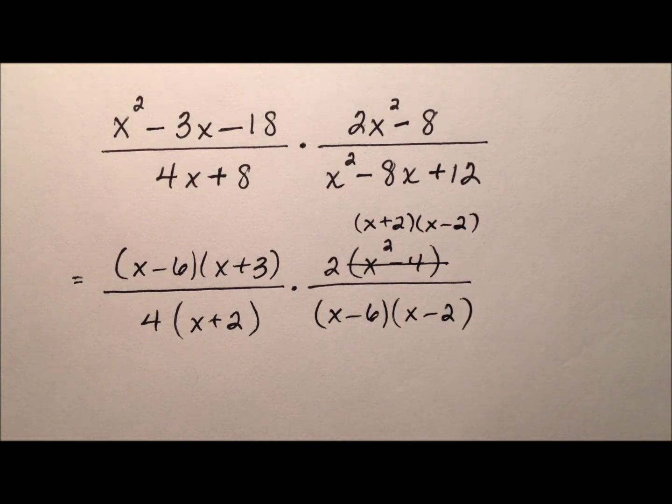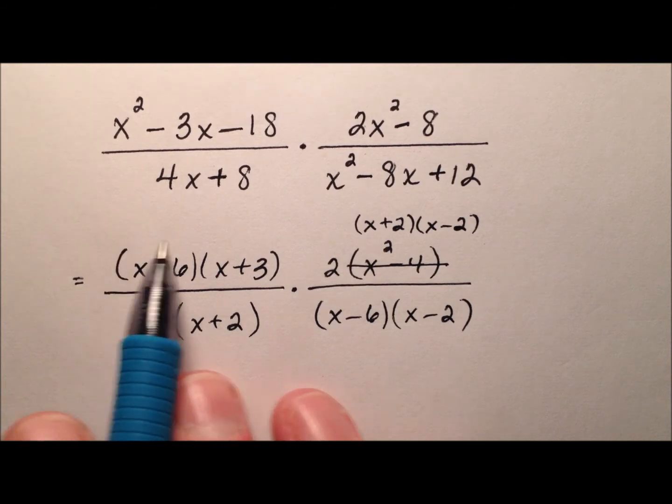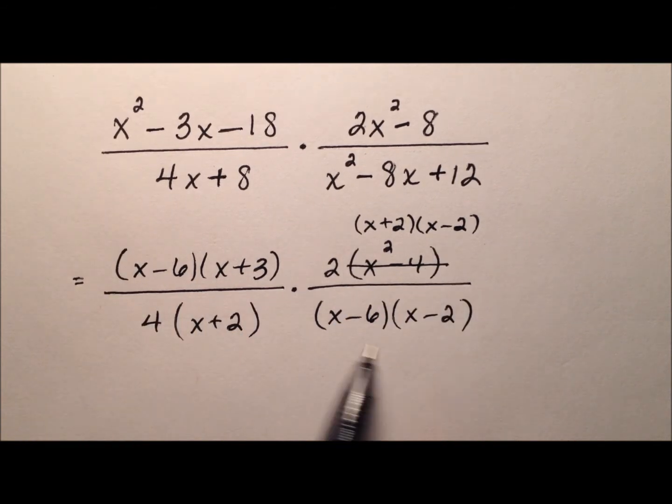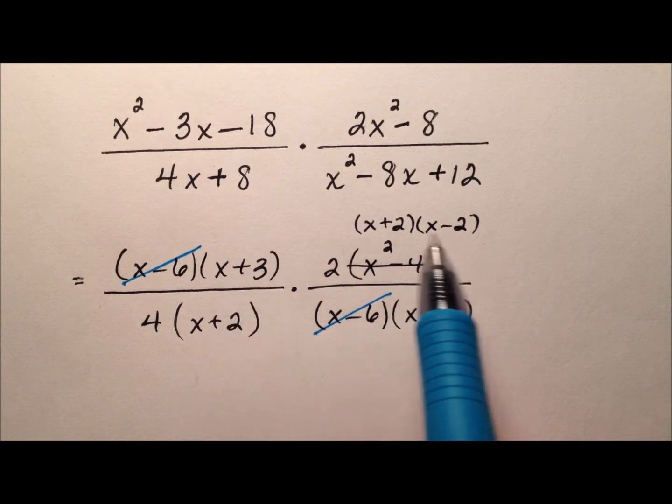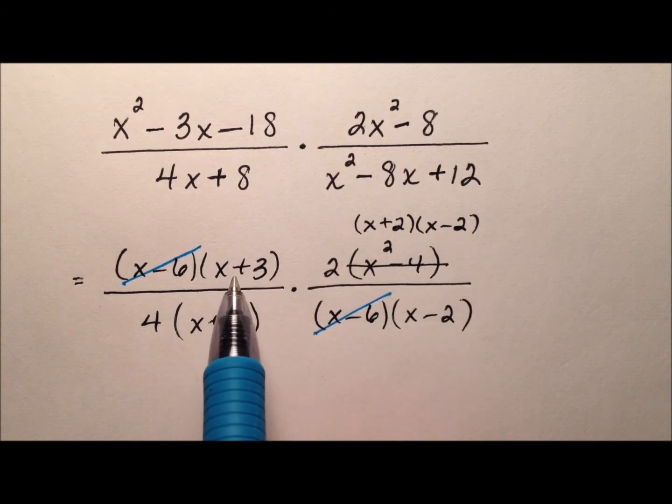Now I have several common factors if I look at the top and the bottom. The first one is x - 6. I see he's here and he's also here. The next one is x + 3. I don't see another x + 3 anywhere, so he's going to stick around.